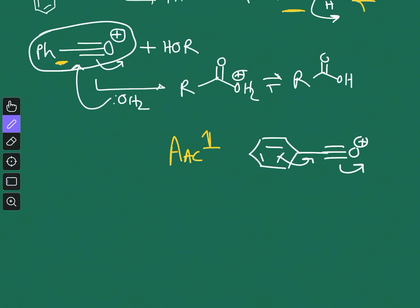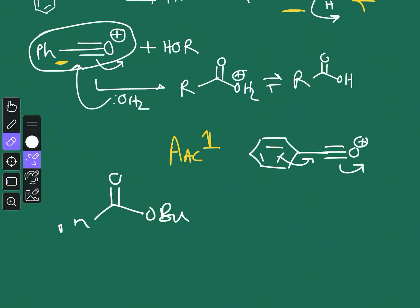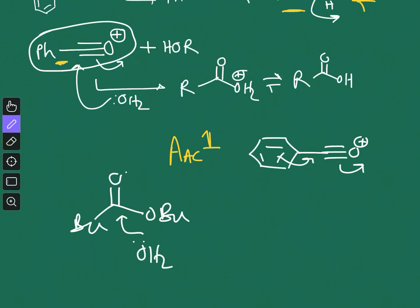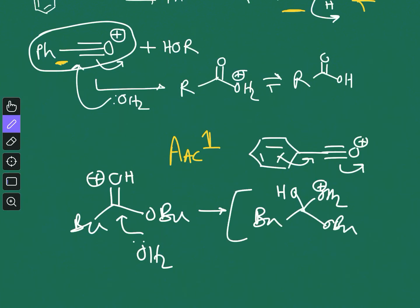AAC1 also operates when the ester bears very bulky groups on both the acyl and alkoxy sides, such as tert-butyl groups. In that case, water attack on the protonated carbonyl to form the tetrahedral intermediate is extremely difficult due to steric hindrance. By default the reaction proceeds through the AAC1 pathway. So AAC1 operates either with a stabilizing aromatic group or with severe steric hindrance.